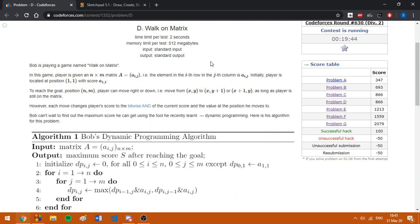And at each step, our player can move either right or down, as long as the player doesn't leave the matrix. And the total score the player gets is the bitwise AND of all the values on his path.